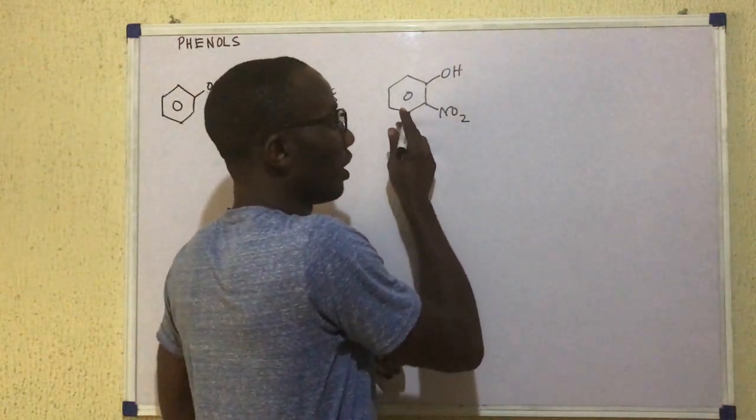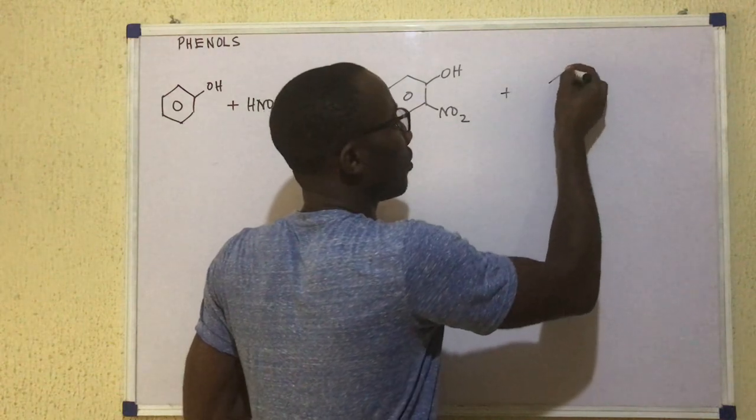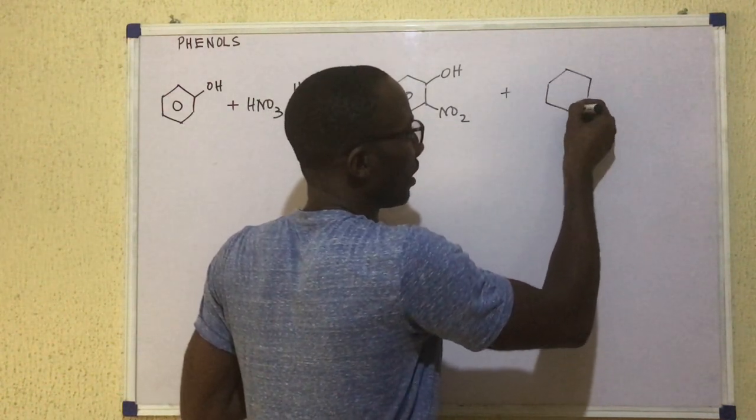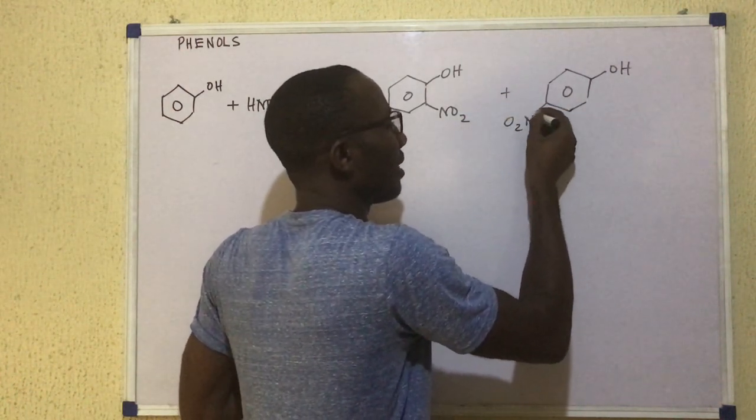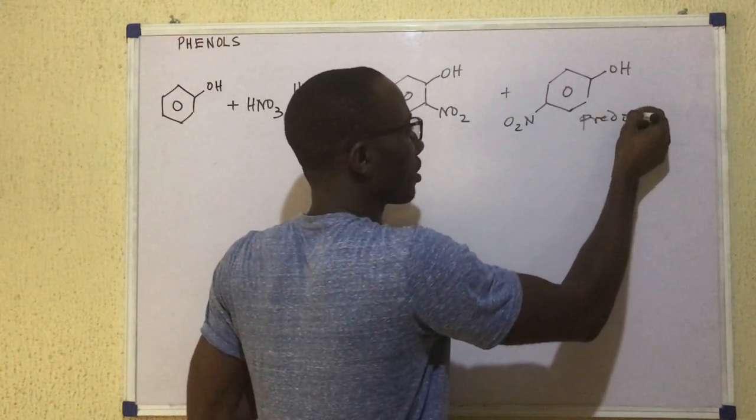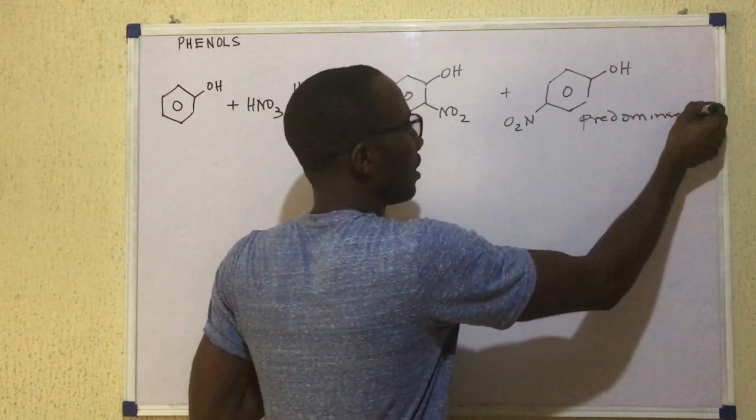This compound is steam volatile, but the other product is not volatile. We have that one as OH and then O2N. That's actually the predominant product. So this is the predominant product and it is not steam volatile.